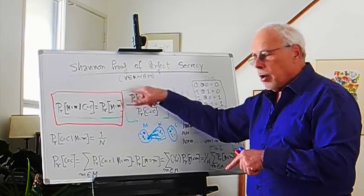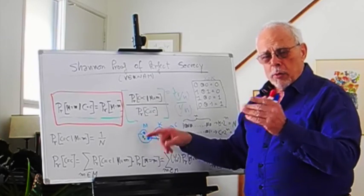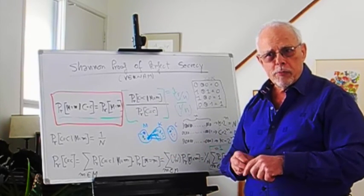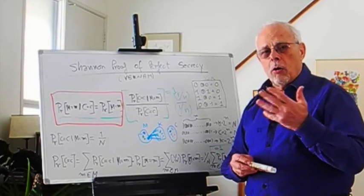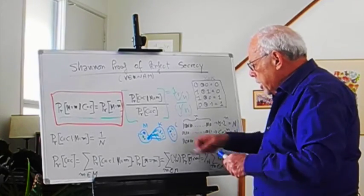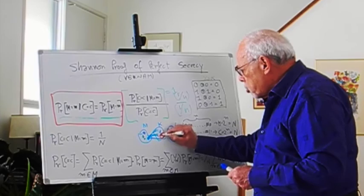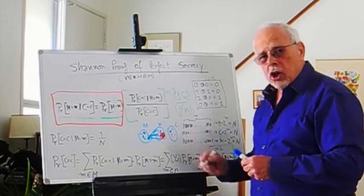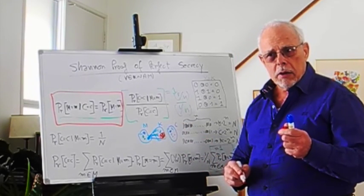If that is the case, this is not equated and we don't have perfect secrecy. Therefore, all the ciphers that we use today, in which the key space is much much smaller than the message space, are breakable.